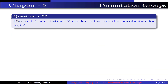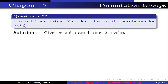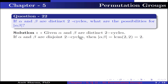Question number 22. If alpha and beta are distinct 2-cycles, what are the possibilities for the order of alpha beta? Given alpha and beta are distinct 2-cycles. If alpha and beta are disjoint 2-cycles, then the order of alpha beta is LCM, which is equal to 2.